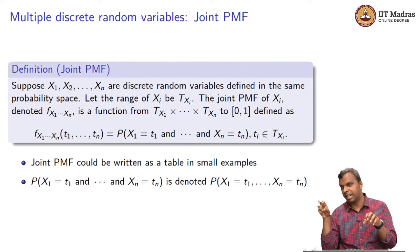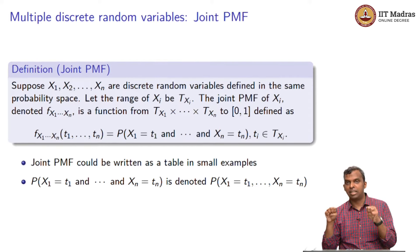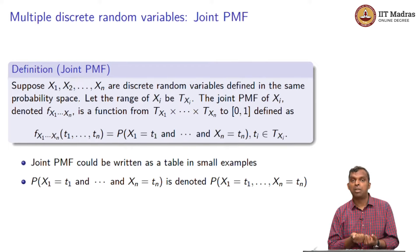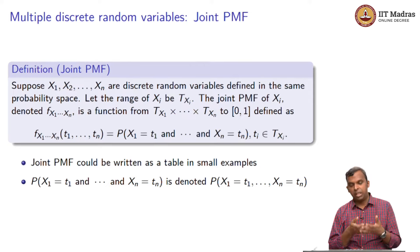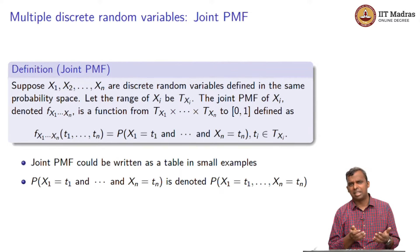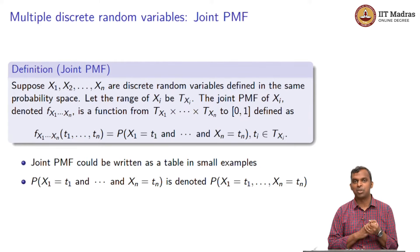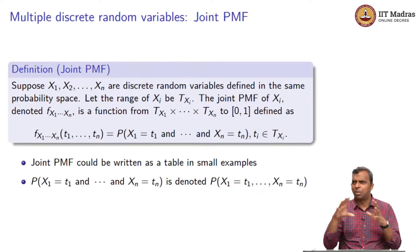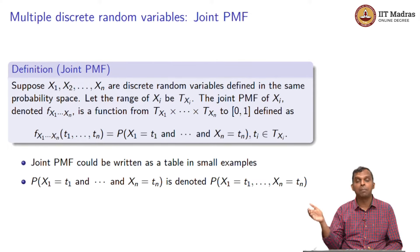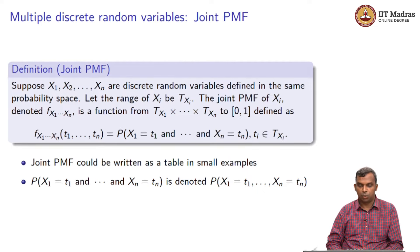Then the joint PMF of all these guys X1, X2 to Xn, one can write as f subscript X1, X2 to Xn. Just like we did before, we had two random variables, you put f subscript XY, you have n random variables, you put all of them in the subscript. And it will become a function from the Cartesian product of the ranges. What is going to be my joint PMF evaluated at t1 to tn? It is simply the probability that X1 equals t1 and X2 equals t2 and so on till Xn equals tn. This is joint PMF, easy enough to define.